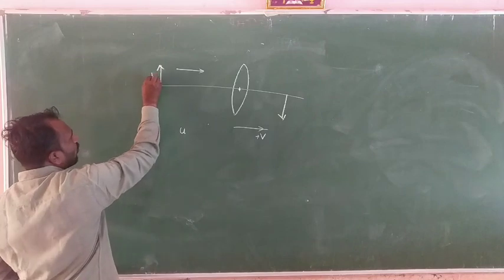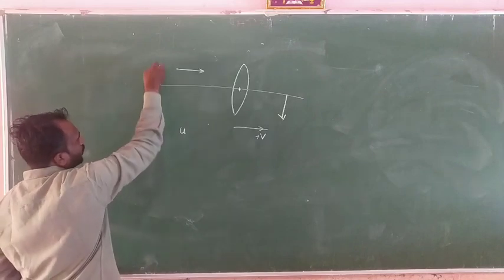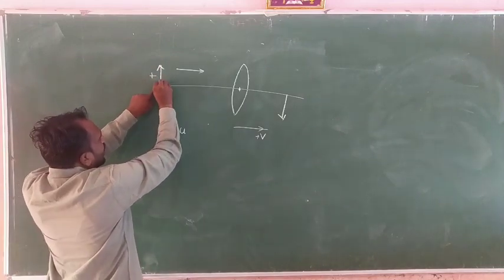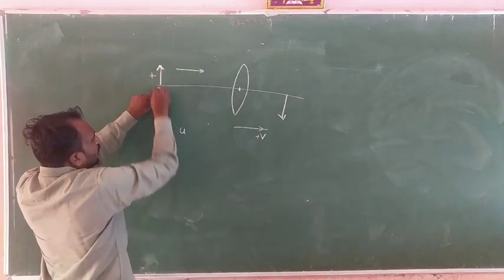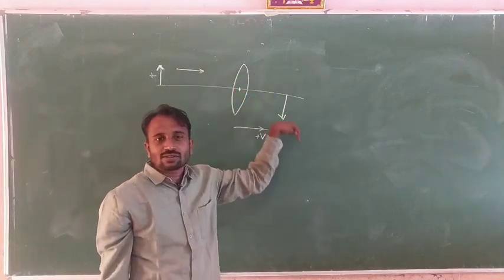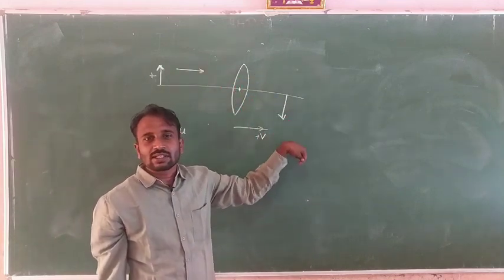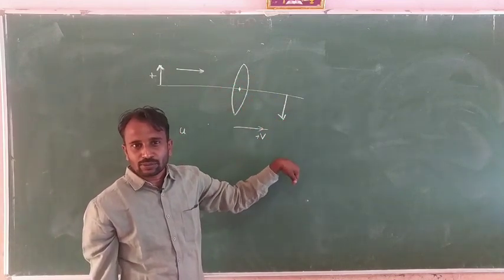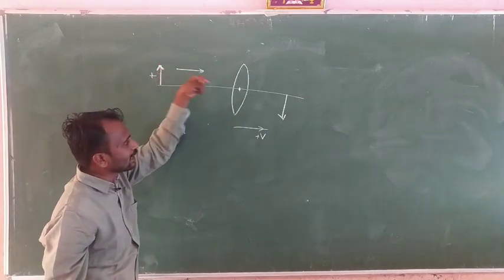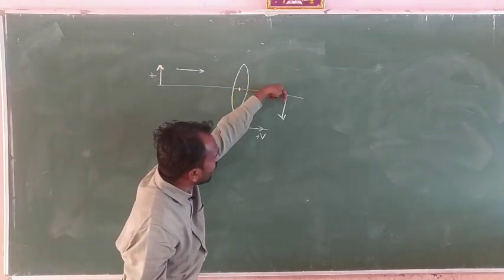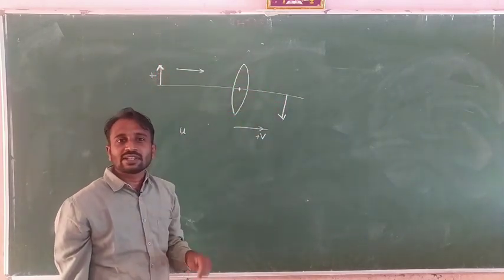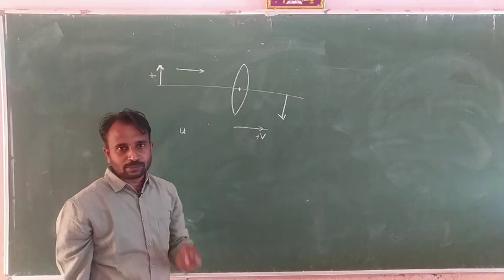For heights: measurements above the principal axis are positive, and measurements below the principal axis (downward or inverted) are negative.